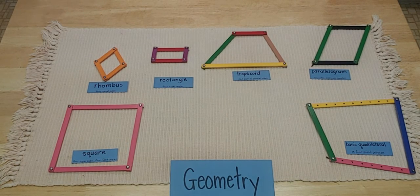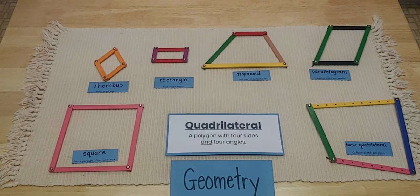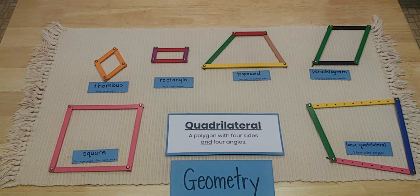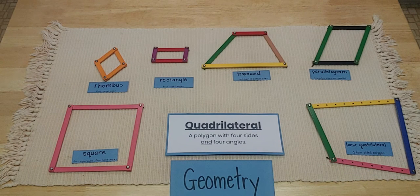For today's lesson we're going to be talking about quadrilaterals. Quadrilaterals are shapes with four sides and four angles. So let's get started.